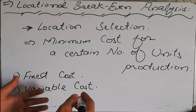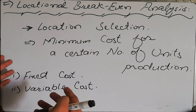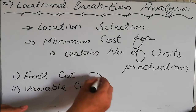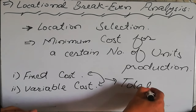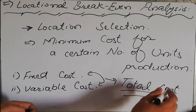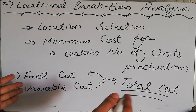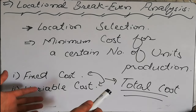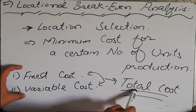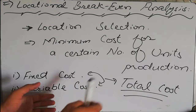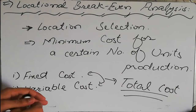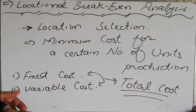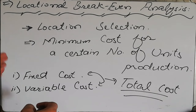The variable cost is the cost that is totally dependent on the number of units being produced. It is called variable cost because it changes as the number of units changes. The sum of these two costs gives us the total cost. We need to minimize this total cost for a certain number of units, and we try to select the location that provides minimum cost for a certain number of products.